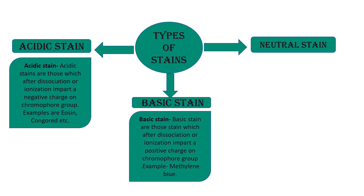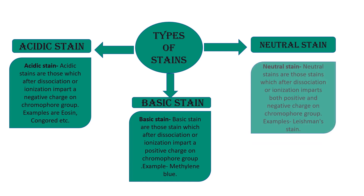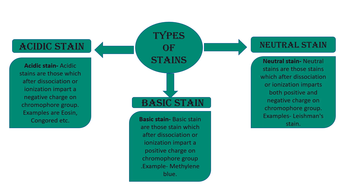Basic stains are those which, after dissociation or ionization, impart a positive charge on the chromophore group — in simple words, the chromophore group in a basic stain carries a positive charge. An example is methylene blue. Neutral stains are those which, after dissociation or ionization, impart both positive and negative charges on the chromophore group.